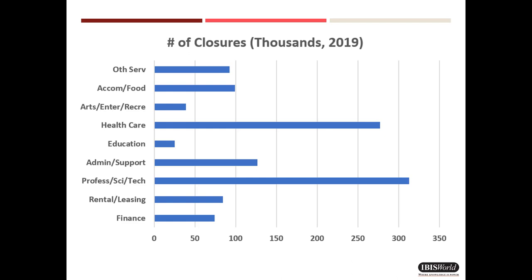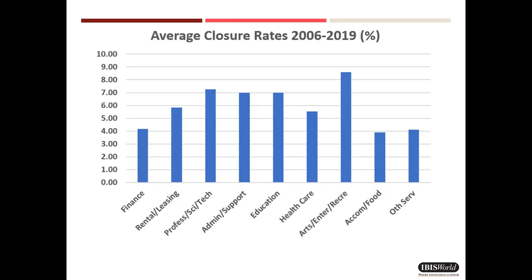Let's take a peek at some closure data. This figure depicts the number of business closures last year. The healthcare and professional scientific and technical services data is somewhat misleading, since these groups have been experiencing a great deal of M&A activity rather than bankruptcy-related closures. This consolidation has been going on for more than a decade. As for historical business closing rates, arts, entertainment, and recreation, and to a lesser degree, administration and support services stand out. But I'll need to disaggregate this in what follows, in order to provide a more precise indication of where the likely hot spots are going forward.